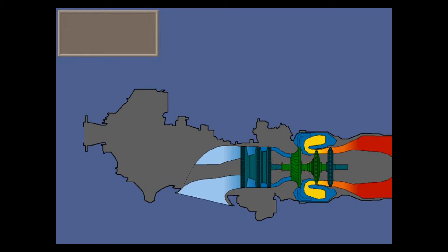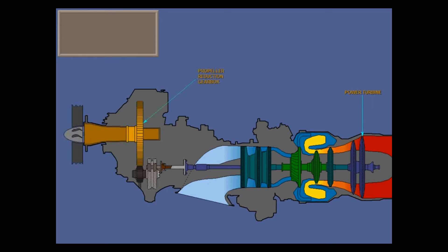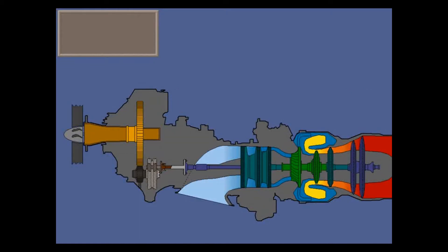To convert the engine to a turboprop, add a two-stage power turbine, driven by the hot gases, connected by a third shaft inside the other two, to a two-stage propeller reduction gearbox, which drives the prop. You'll need to monitor important engine speeds.